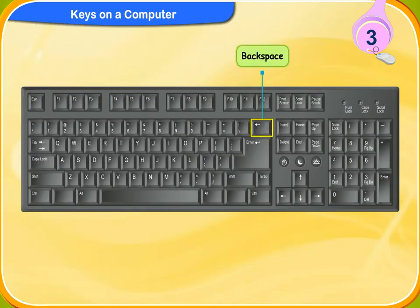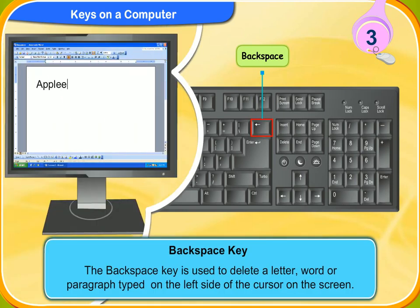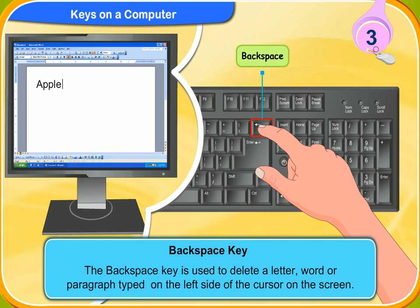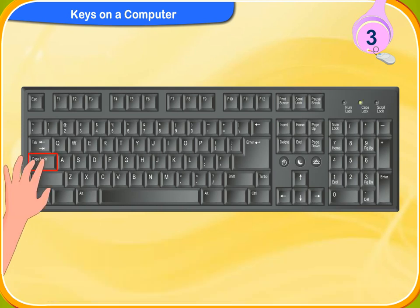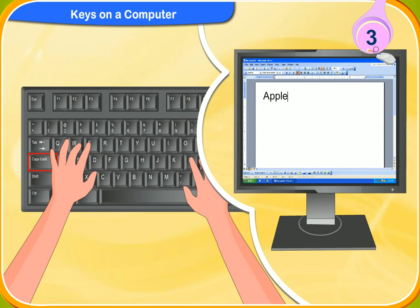Let's start with the backspace key. The backspace key is used to delete a letter, word or paragraph typed on the left side of the cursor on the screen. The caps lock key activates the lowercase into uppercase. It is used to type in capital letters. When you press this key, a light glows on the top right corner of the keyboard, indicating that the caps lock is on.